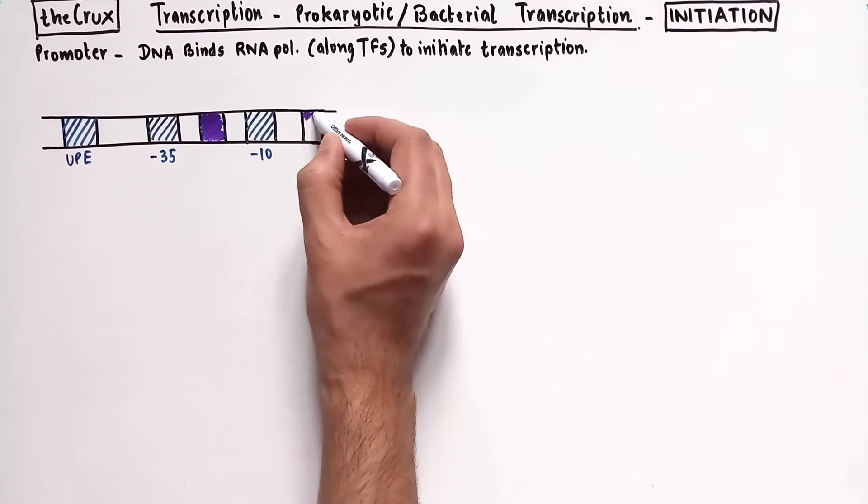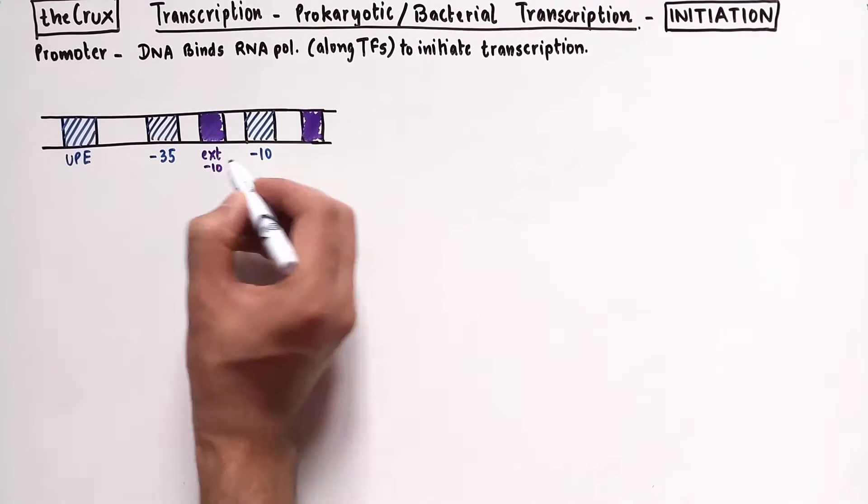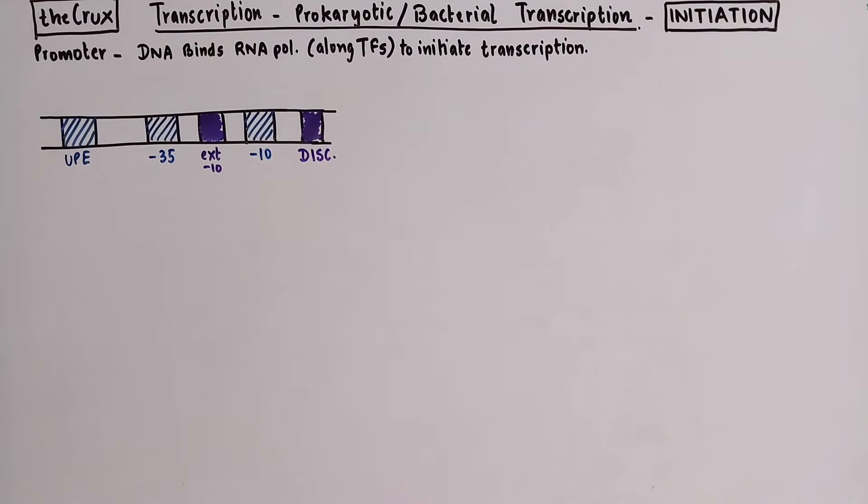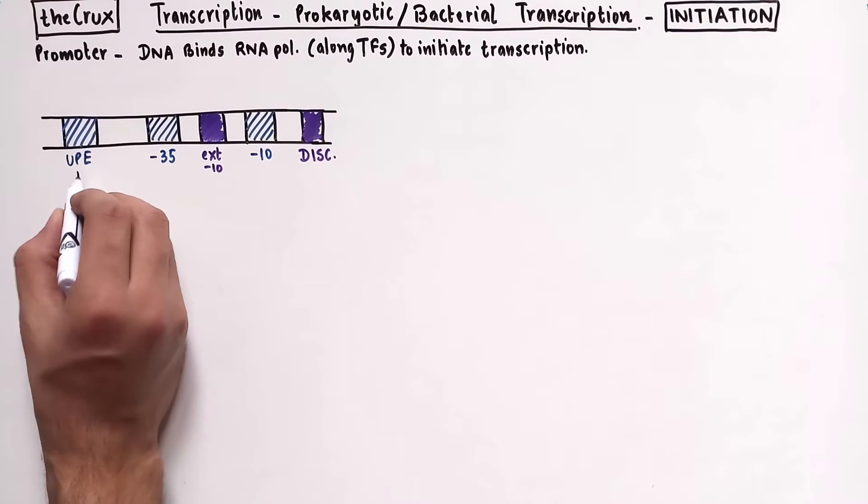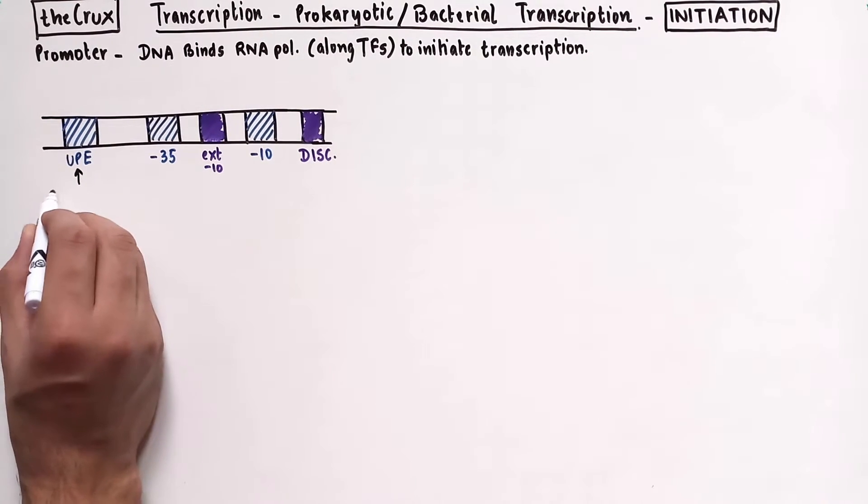On top of this you sometimes see extended negative 10 and the discriminator element. If you don't know what these are check out the prokaryotic promoter video. The link is in the description as well as in the cards on the top right corner.